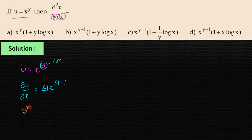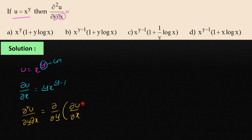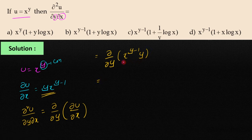Now ∂²u/∂y∂x can be written as ∂/∂y of (∂u/∂x). That equals ∂/∂y of y·x^(y-1). This is in the form of a product (uv), so we apply the uv rule.